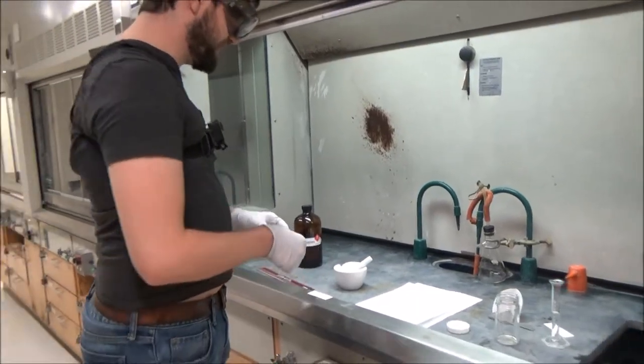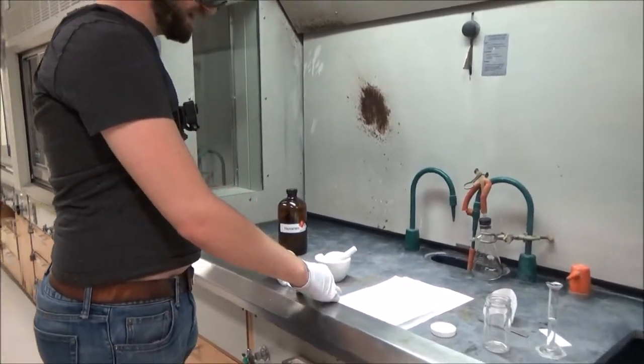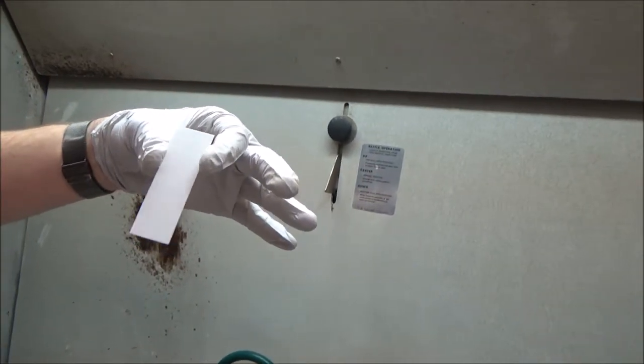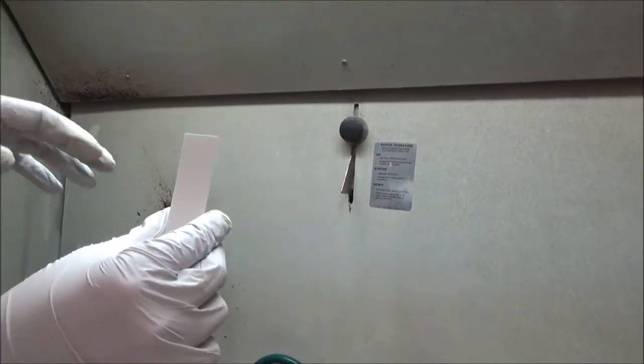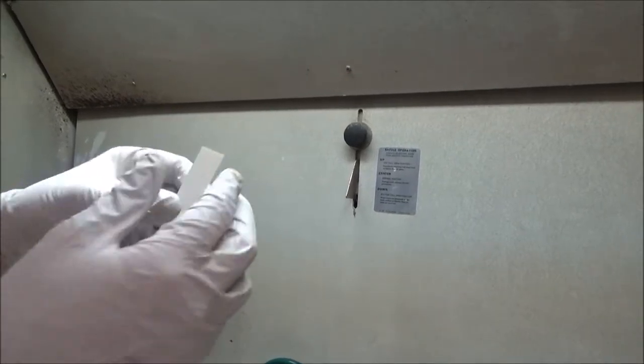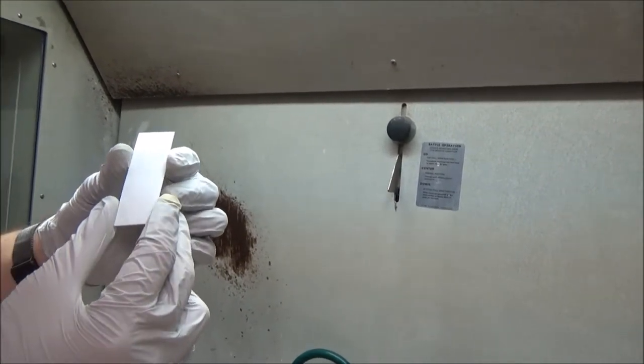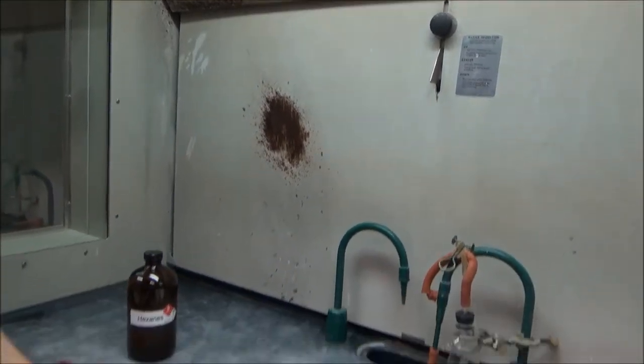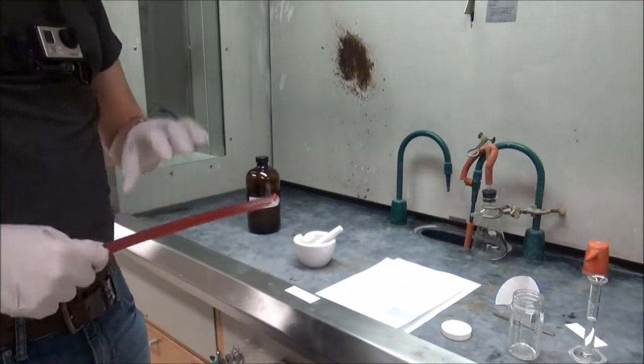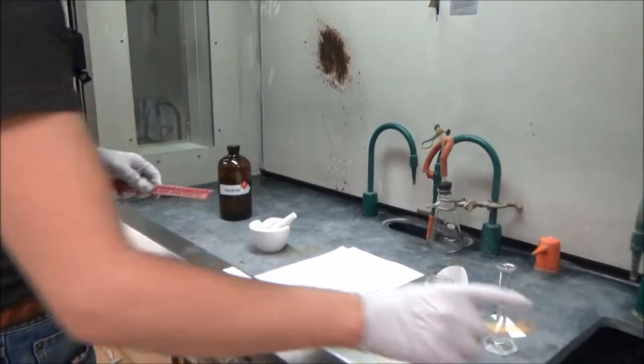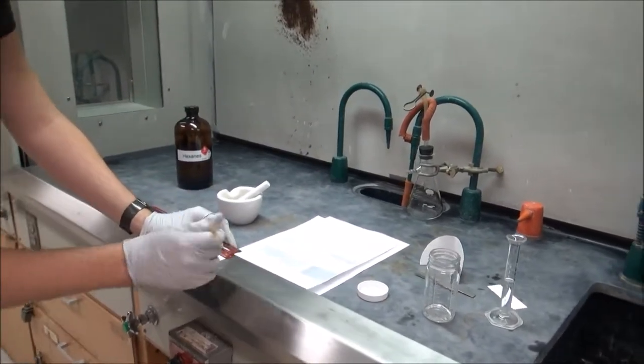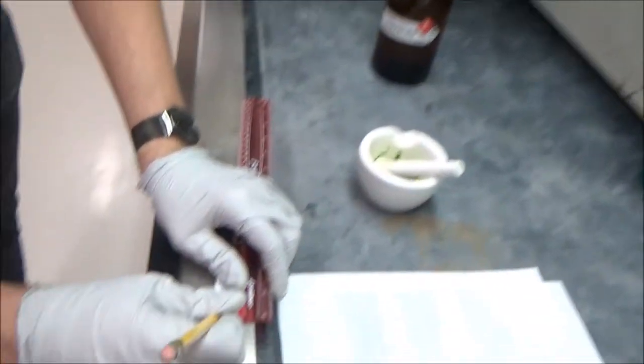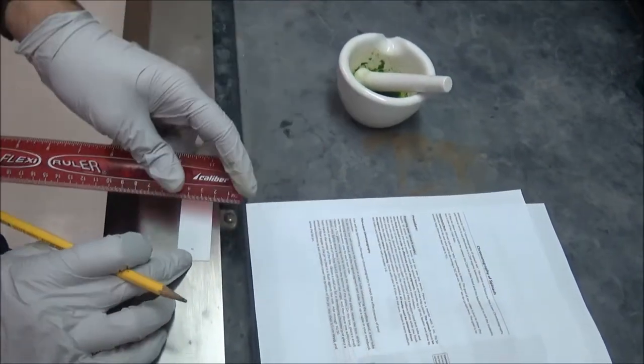The first thing I need to do is get a TLC plate, and I already have one prepared. You can see this tall rectangular plate has two sides: an opaque silica side and a shiny plastic side. Everything that we do on this plate we will do on the silica side. I'm going to draw a small line one centimeter above the bottom and extend that across the entire plate.